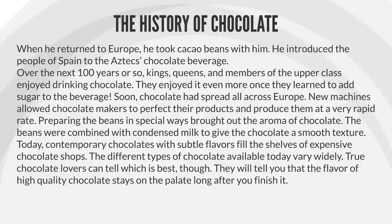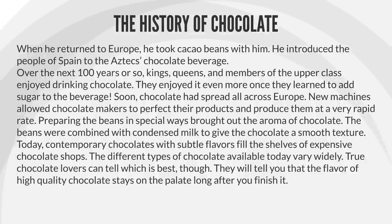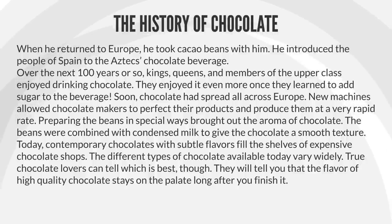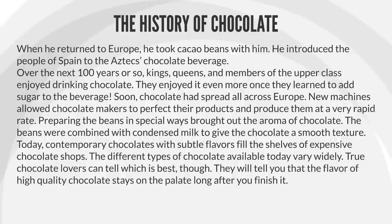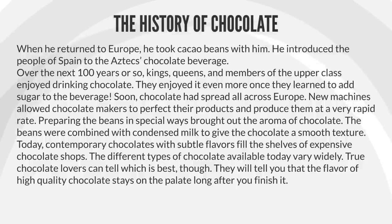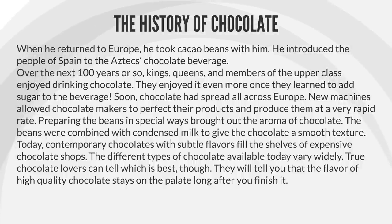Over the next 100 years or so, kings, queens, and members of the upper class enjoyed drinking chocolate. They enjoyed it even more once they learned to add sugar to the beverage. Soon, chocolate had spread all across Europe. New machines allowed chocolate makers to perfect their products and produce them at a very rapid rate. Preparing the beans in special ways brought out the aroma of chocolate. The beans were combined with condensed milk to give the chocolate a smooth texture. Today, contemporary chocolates with subtle flavors fill the shelves of expensive chocolate shops. The different types of chocolate available today vary widely. True chocolate lovers can tell which is best, and the flavor of high-quality chocolate stays on the palate long after you finish it.